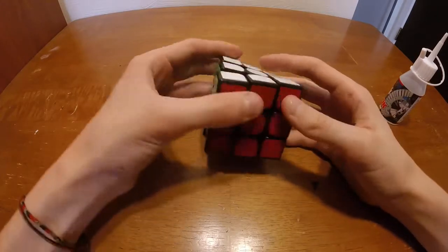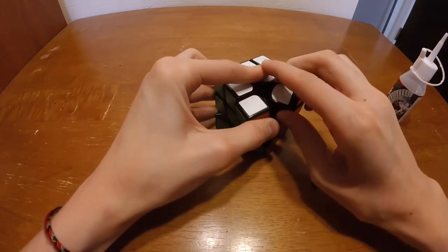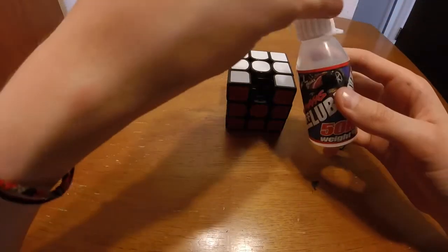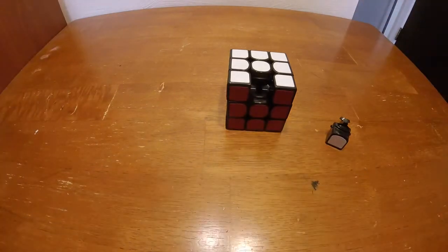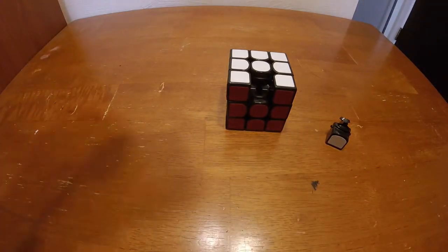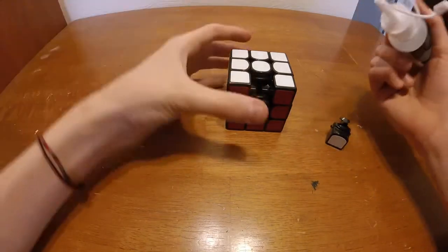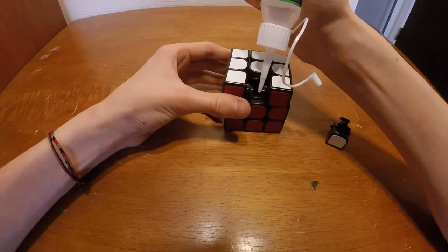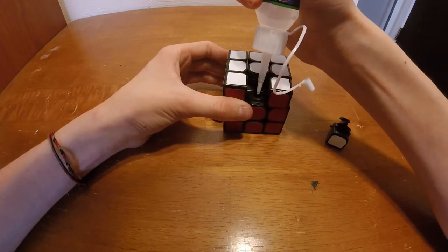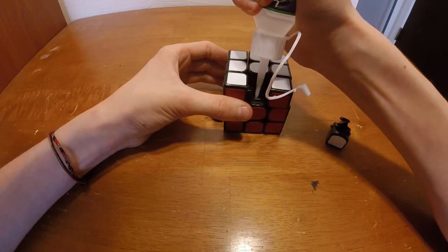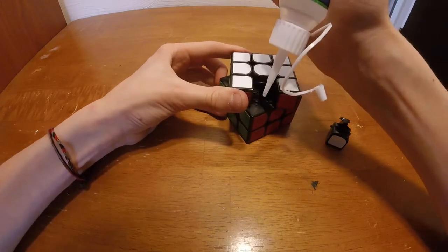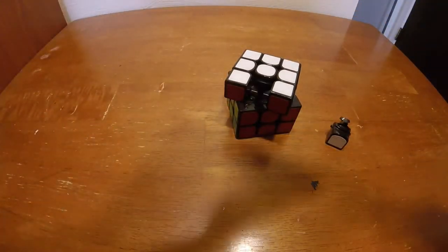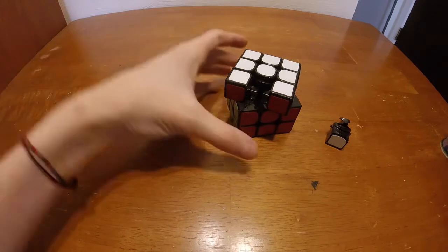So anyways, after it's solved, what you want to do is you just want to pop out an edge like this, and then you want to lube it the first way I showed you. So use whatever weight lube you have or whatever kind of lube. I am going to use 30k for right now. And then you can just put a little bit on the inside, on the innermost side of the mechanism, and then you can also put a little bit on a different edge.